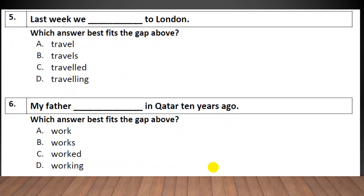We traveled — that's right, about a finished action. My father worked in Qatar ten years ago. I have the word 'ago', which indicates the past simple.